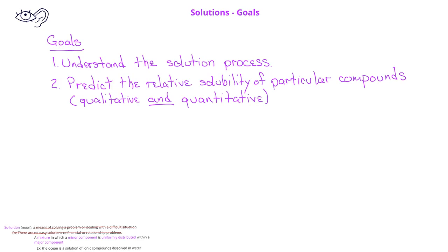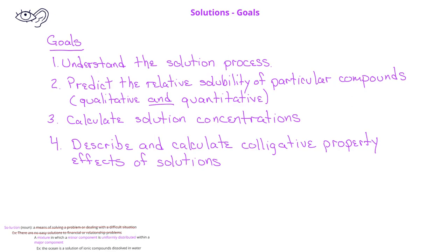Second, we'll want to be able to predict the relative solubility of particular compounds. We'll want to do this both qualitatively. In other words, will one compound be more or less soluble than another compound? And we'll also want to talk about it quantitatively. Specifically, how much of a particular compound will dissolve in another. The third major goal we'll have is to calculate solution concentrations. We'll use a number of different measures of solution concentrations. The final goal is to describe and calculate colligative property effects in different types of solutions.